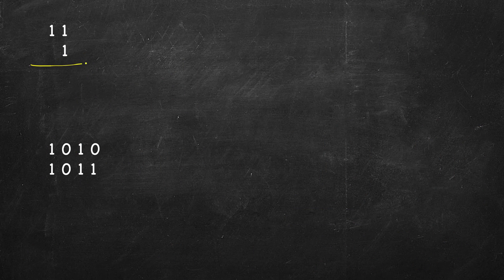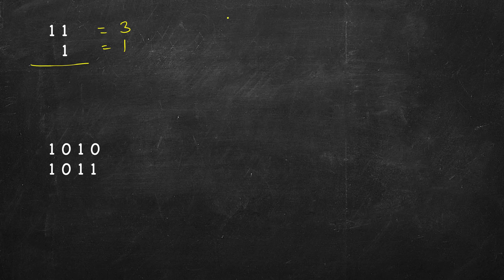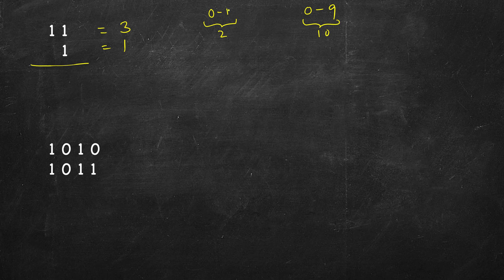Let's understand how to perform binary addition given two numbers. This is very similar to decimal addition. In decimal, when we add two numbers and the result goes beyond 9, we take a carry. In binary we only have two values, 0 and 1, so if the result is more than 1 there is a carry, otherwise there is no carry. Initially carry is 0, so we add 1 and 1 and get 2, which is more than 1, so there is a carry of 1 and the result digit is 0.